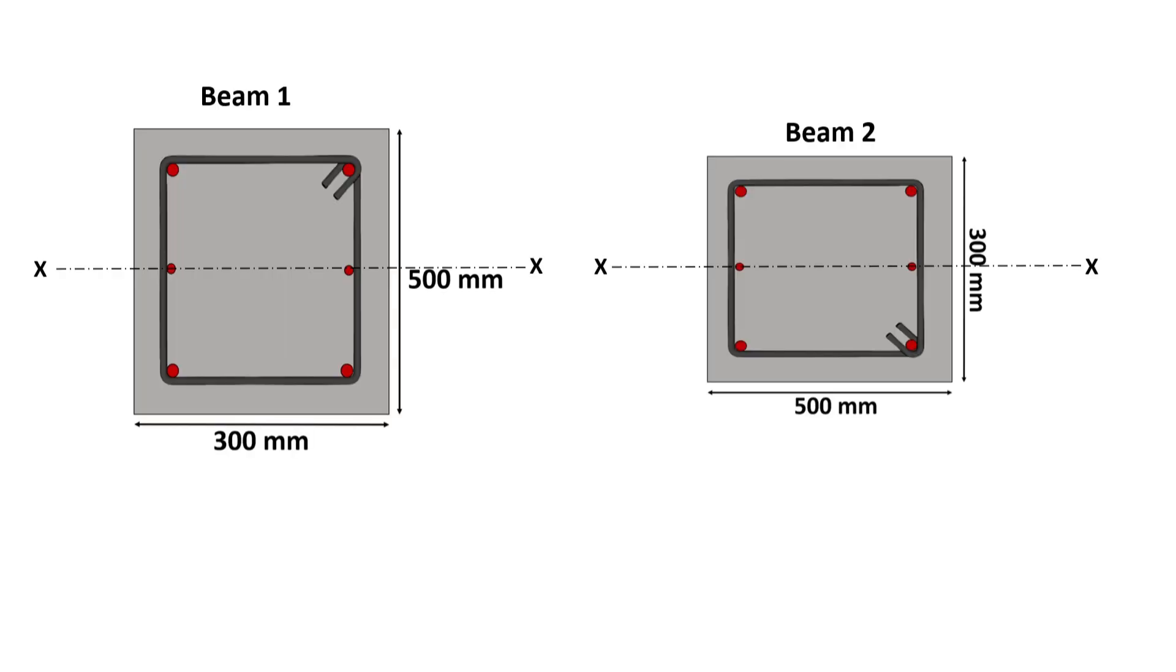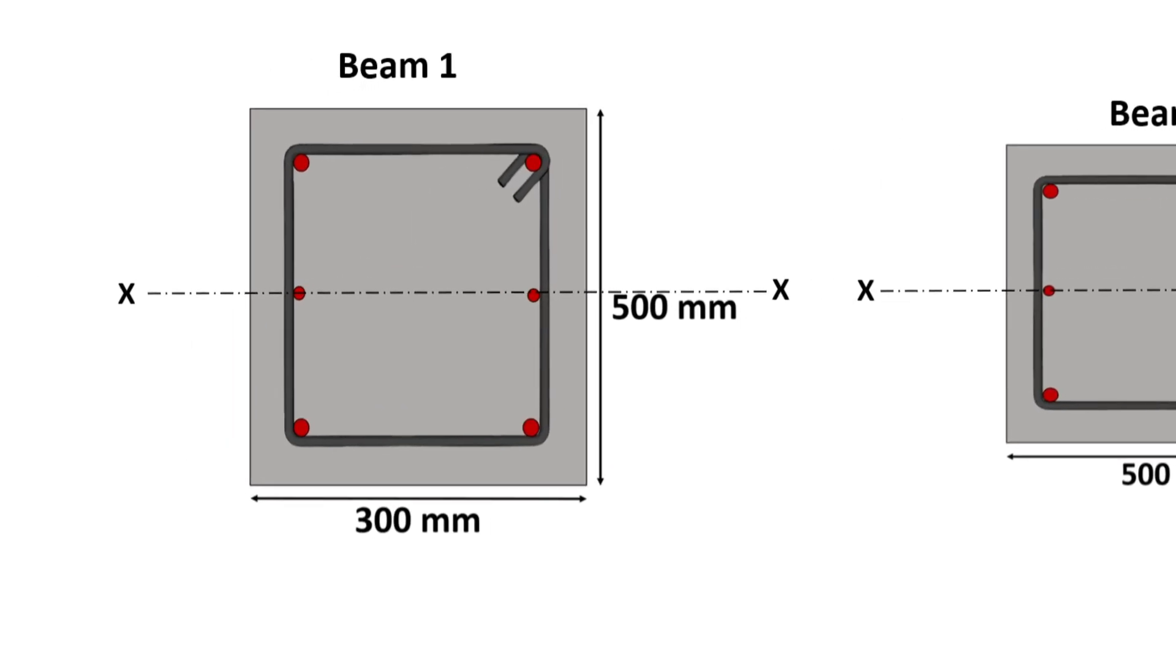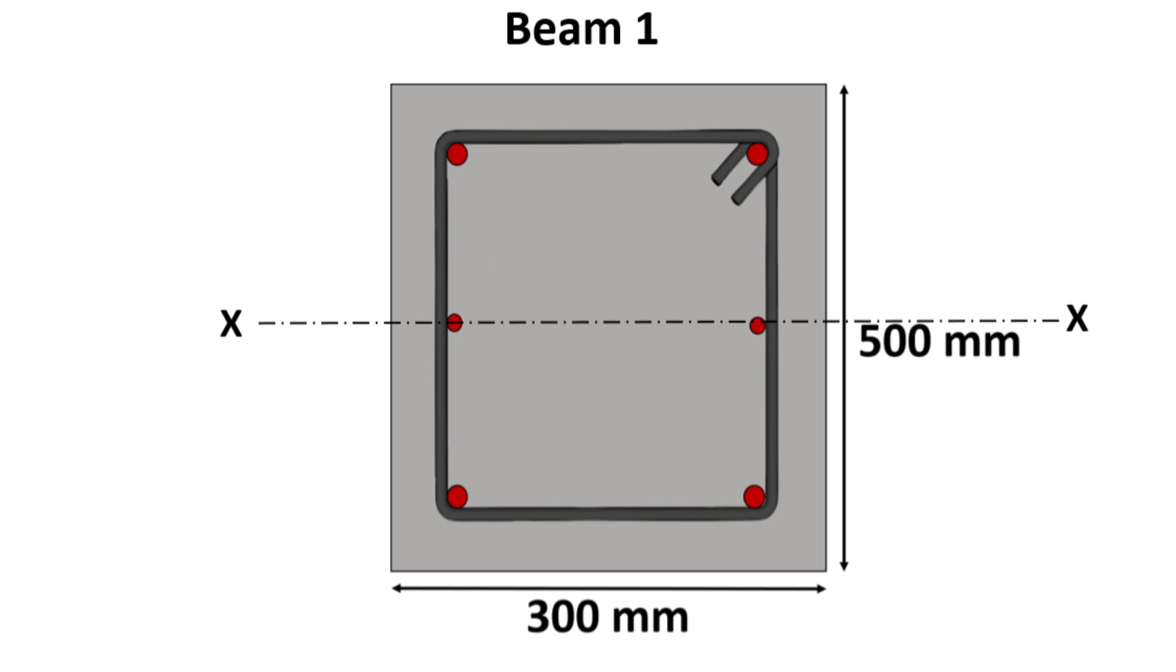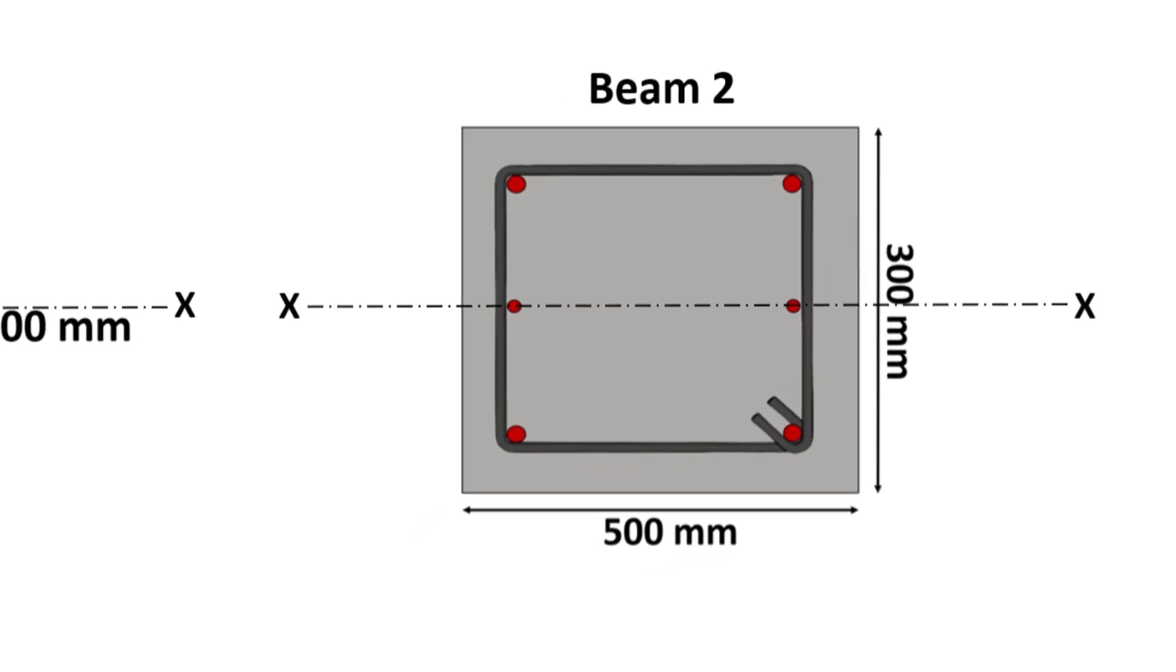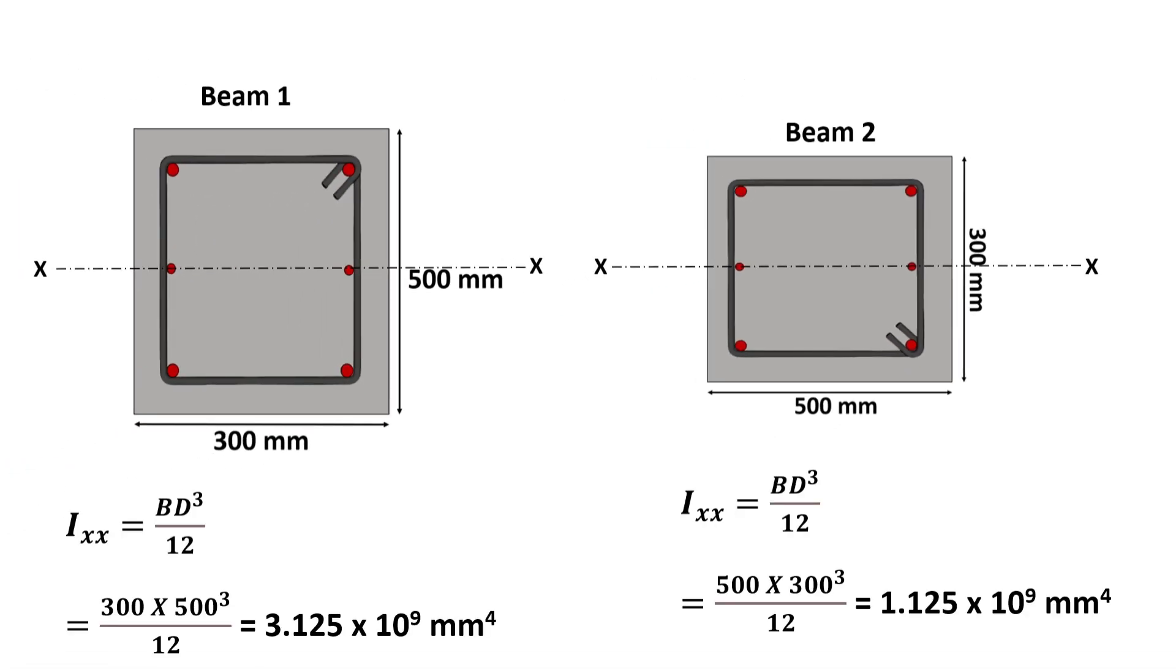For illustration, let's consider two beams having same cross sectional area with different orientations. Beam 1 has a width of 300 mm and its depth is 500 mm, while beam 2 has a width of 500 mm and its depth is 300 mm. Now let's calculate the moment of inertia for both the beams.